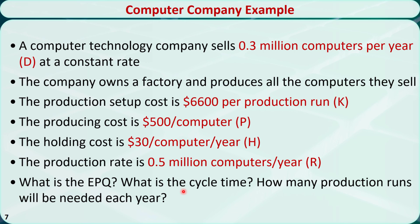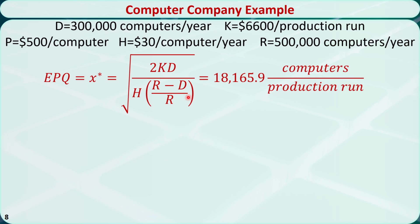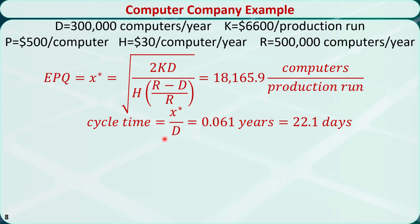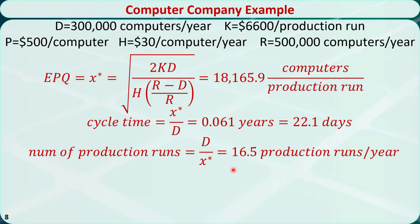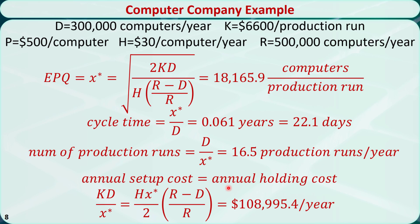Let's answer these questions: What is the EPQ? What is the cycle time? How many production runs will be planned each year? Using the formula, the EPQ is about 18,000 computers per production run. The cycle time is 0.061 years, or about 22 days. There will be a total of 16.5 production runs during the year. The annual setup cost equals the annual holding cost, and both are approximately $109,000 per year.